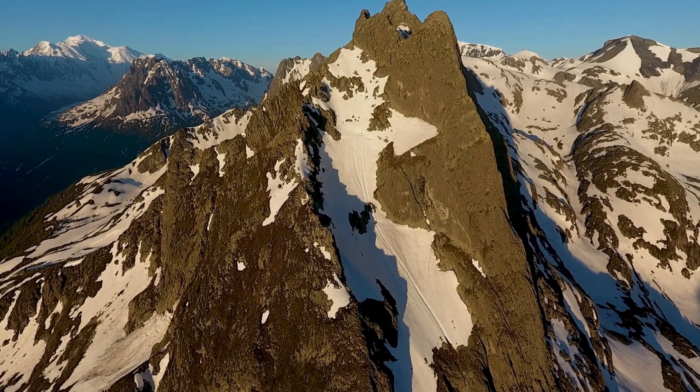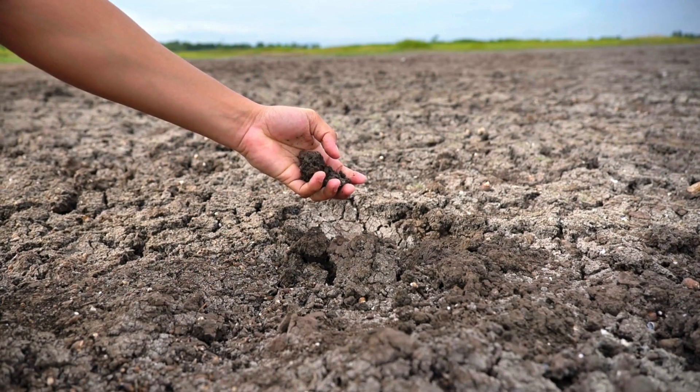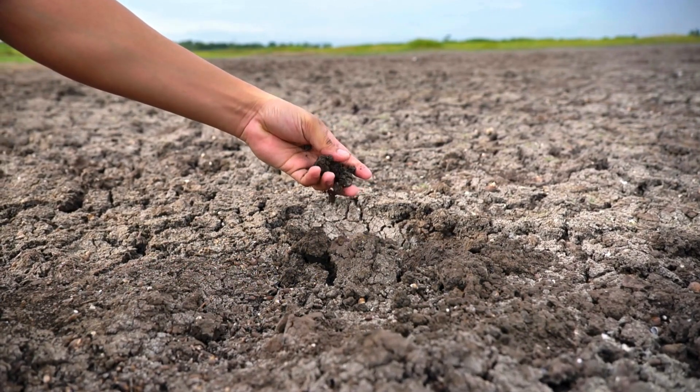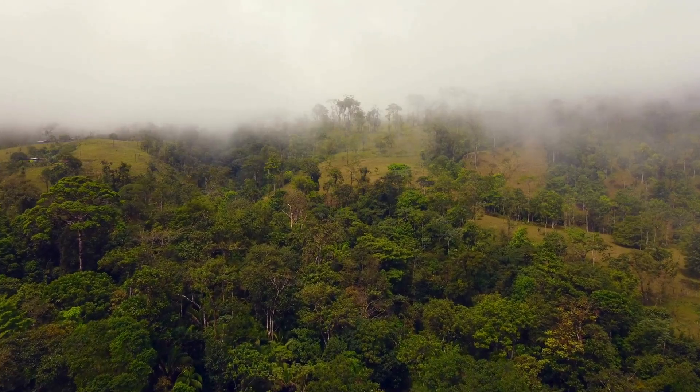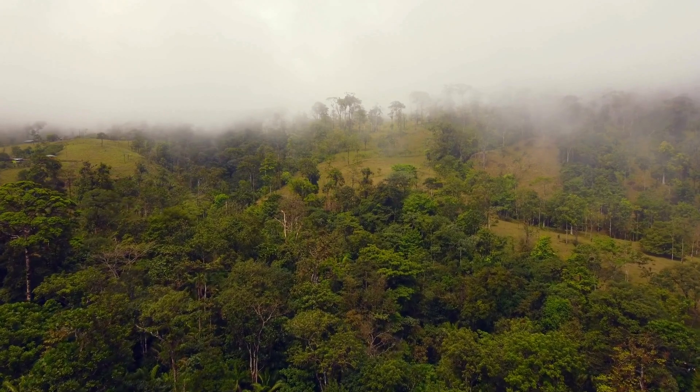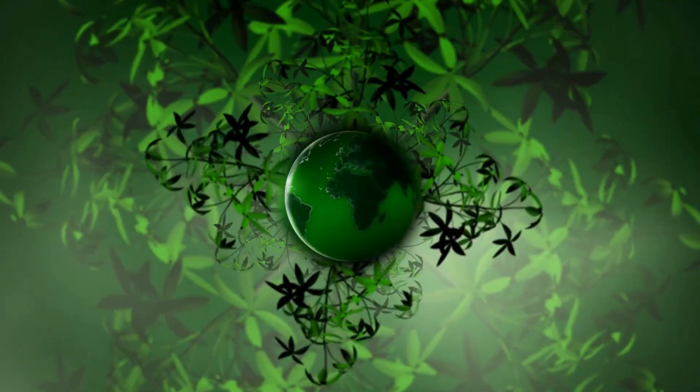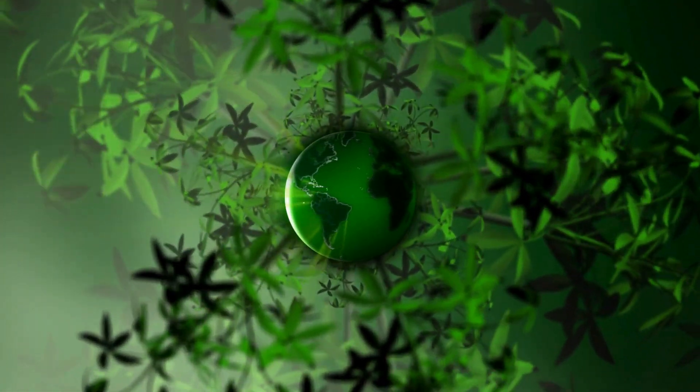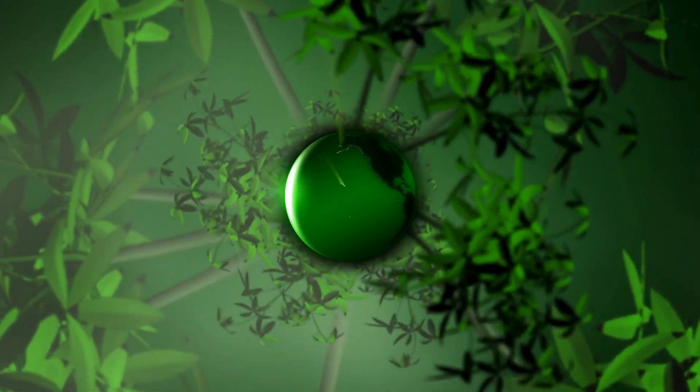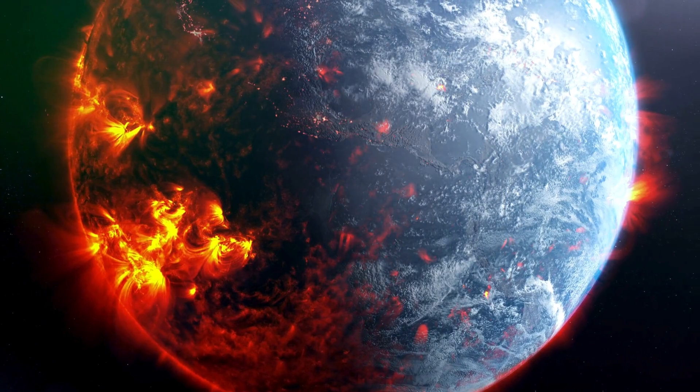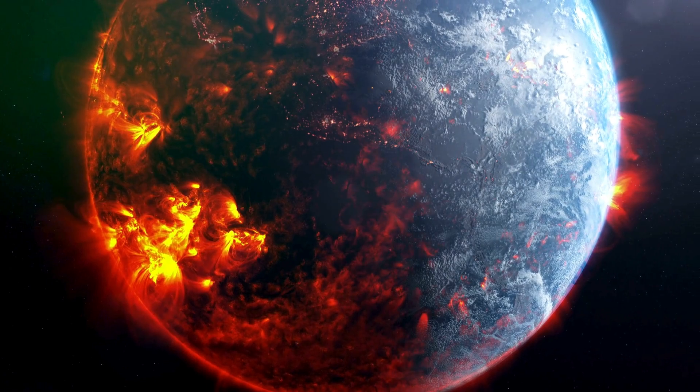He began to study the layers of soil, each one a snapshot of a different period in Earth's history. He found that these layers were like pages in a book, each one telling a different chapter of the Earth's story. This idea, this theory, it resonated. It made sense. And so, the geological timescale of Earth was born, a timeline not of thousands, but of billions of years. But like any good story, there were gaps, missing chapters that left us with more questions than answers.